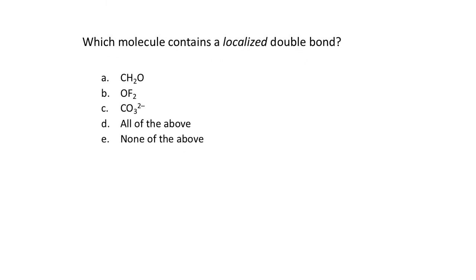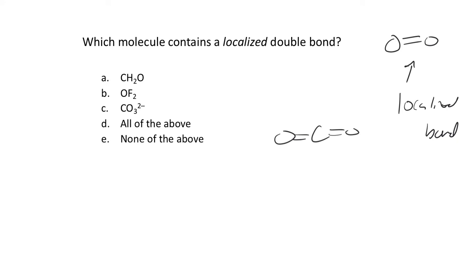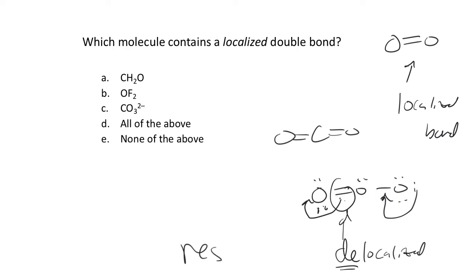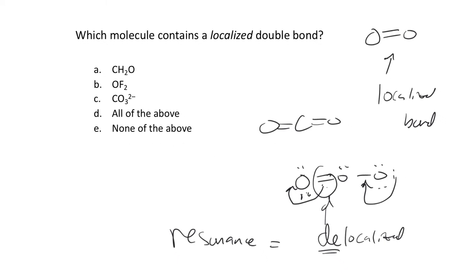Sometimes you see the word 'localized.' A localized double bond is just like a normal double bond - a structure that just has it exactly where you think it is. O2 has a localized double bond. Carbon dioxide also has localized double bonds. But when we see ozone, this is what we call a delocalized bond - the double bond can move to either side. Delocalized means spread across multiple centers, not localized to always be between those two atoms. So resonance equals delocalized bonding.